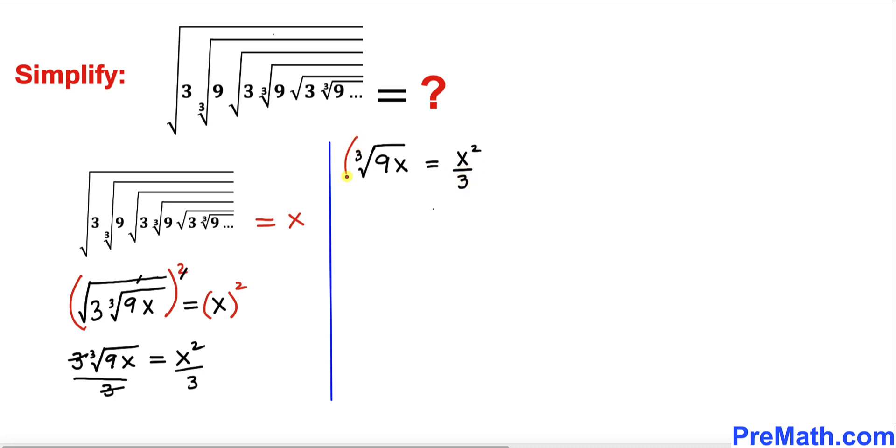Let's go ahead and take a cube on both sides to undo this cube root. We are going to take a cube on the other side as well. Now we can see this cube and cube root they undo each other.